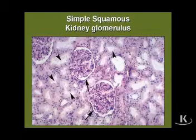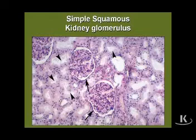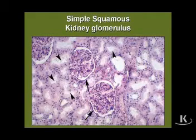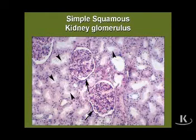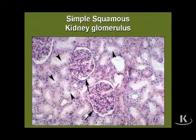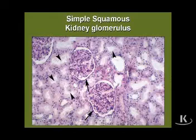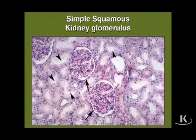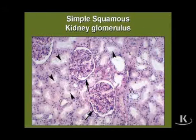Moving from simple columnar to simple squamous epithelium: simple squamous epithelium is highly characteristic of the endothelial cells that line all blood vessels, but it also forms the parietal layer of the kidney glomerulus, as indicated by the arrow. At the arrowheads are proximal tubules that again contain a simple cuboidal epithelium characterized by numerous microvilli.